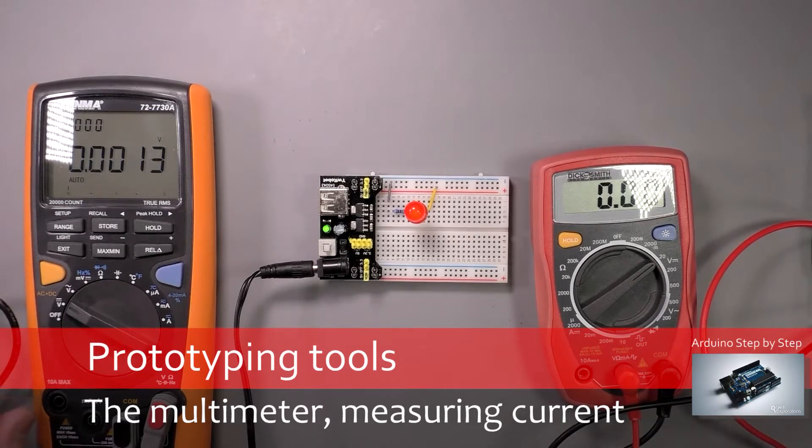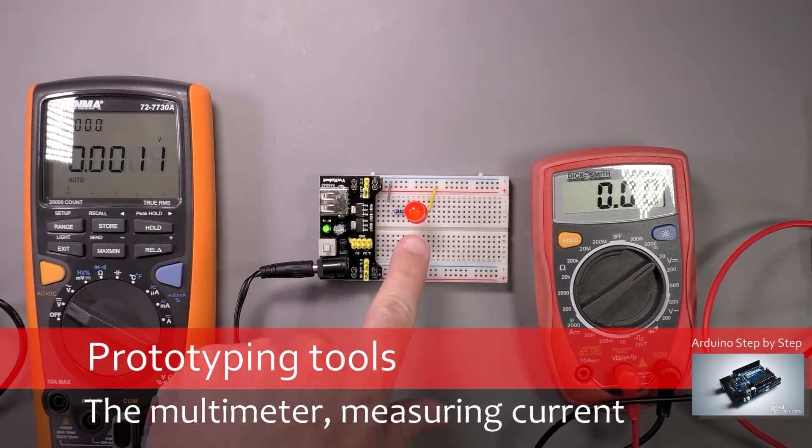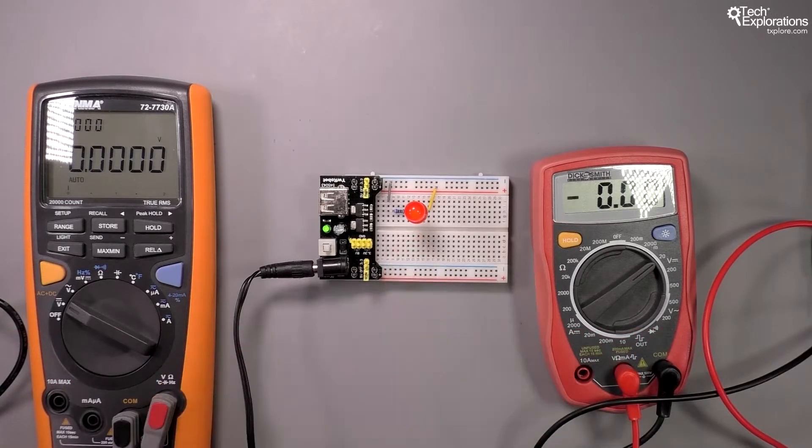Another thing I can do with the multimeter is measure the current. For example, I wonder how much current my LED is consuming?